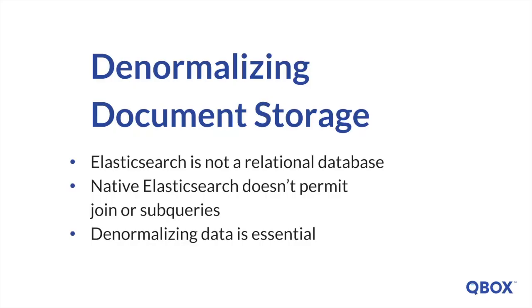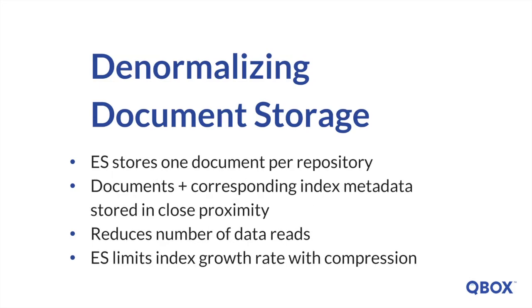It's important to remember that Elasticsearch isn't a relational database, so DBMS concepts won't apply. The most important concept that you must set aside when coming over from conventional databases is normalization. Native Elasticsearch doesn't permit joins or subqueries, so denormalizing your data is essential. Elasticsearch typically stores a document once for each repository. Full-text searches will be extremely fast because the documents are stored in close proximity to the corresponding metadata in the index.